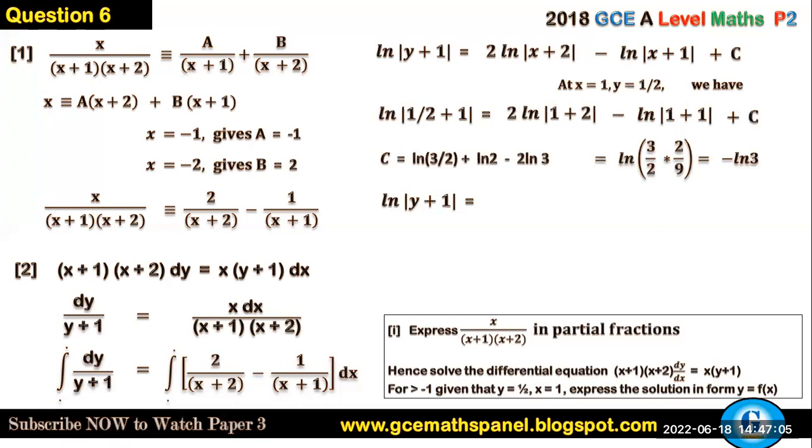Therefore this can be written as ln|y+1| = 2ln|x+2| - ln|x+1| - ln3. We can now simplify the right-hand side. 2ln(x+2) is the same as ln(x+2)². So ln A minus ln B minus ln C is the same as ln[A/(BC)], where A here is (x+2)². So this subtraction means you divide by (x+1) and divide again by 3.